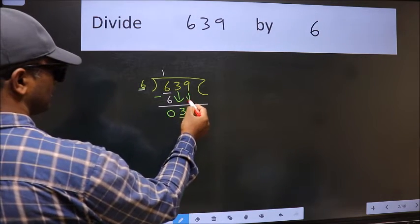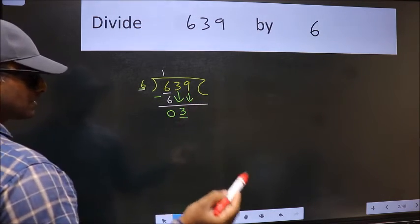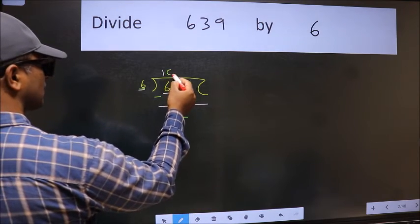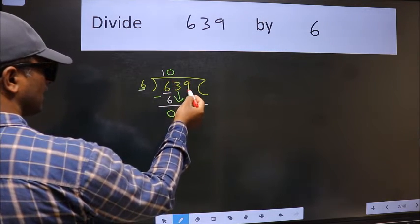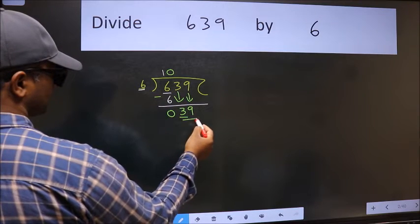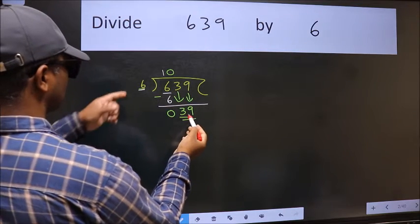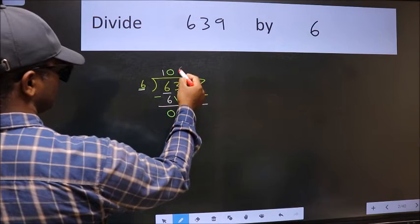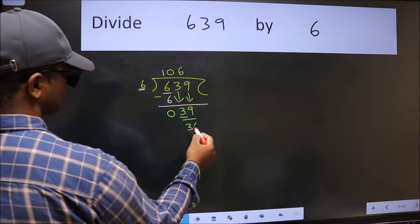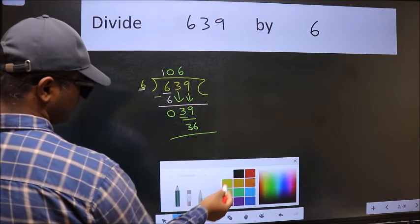The rule to bring down the second number is we should put zero here, then only we can bring this number down. Now 39. A number close to 39 in the six table is 36: six sixes is 36. Now we should subtract.